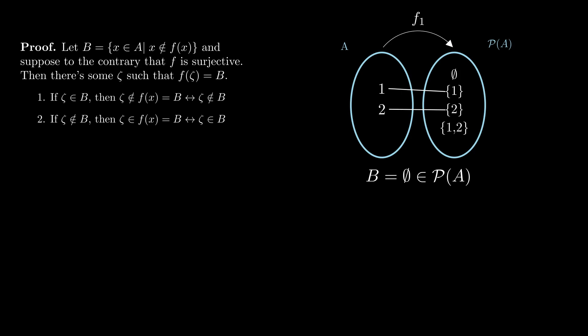And if zeta is not an element of B, still following the definition of B, zeta is in its own image through F, but F of zeta is B. That is, zeta should be in the set B. Again, we get a contradiction.